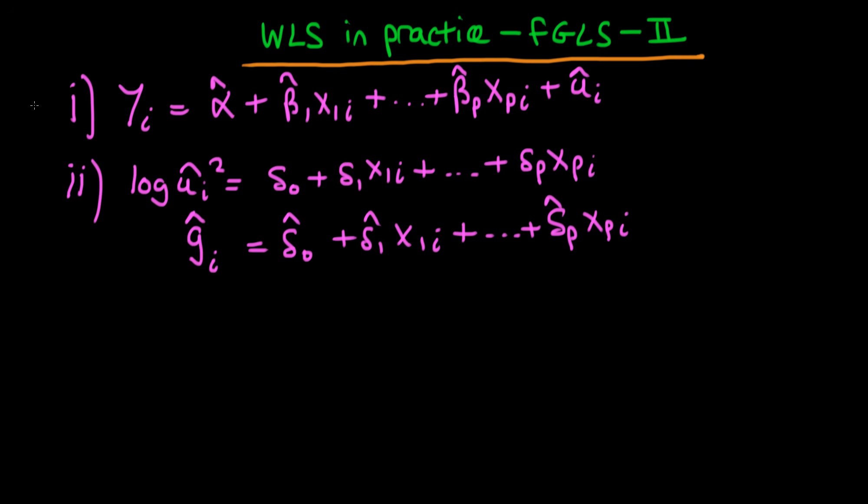The first step was that we run our regression of our dependent variable on our various independent variables. From that we then got our residual, then what we did is we run a regression of